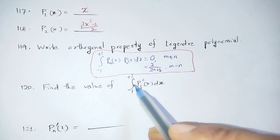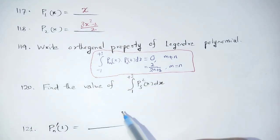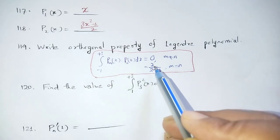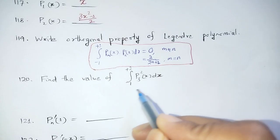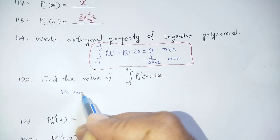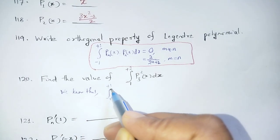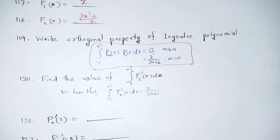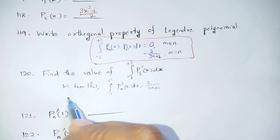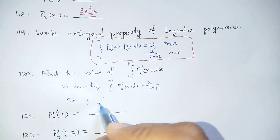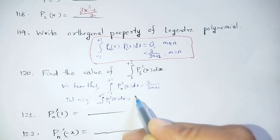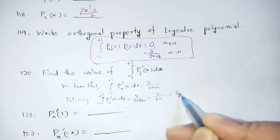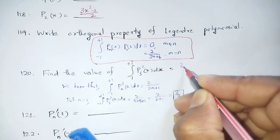Next question: Find the value of the integral from -1 to +1 of [P3(x)]² dx. Using the orthogonal property, integration from -1 to +1 of [Pn(x)]² dx = 2/(2n+1). Putting n = 3: the answer is 2/(2×3+1) = 2/7.